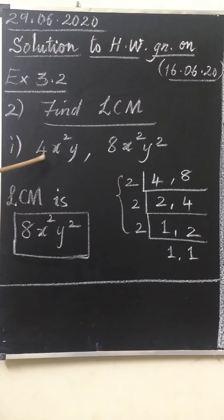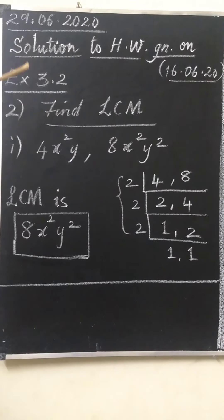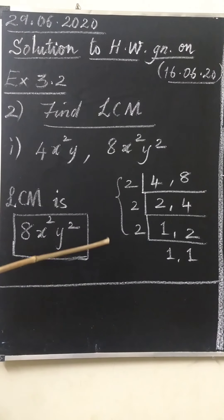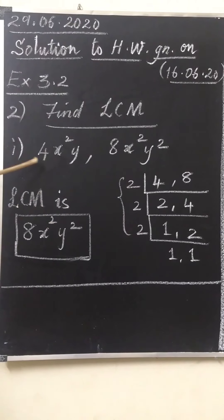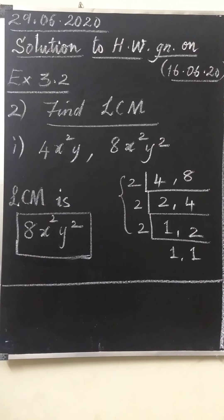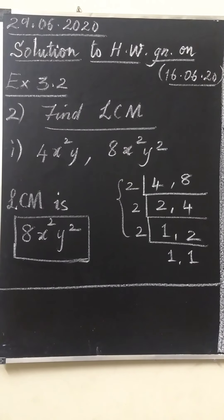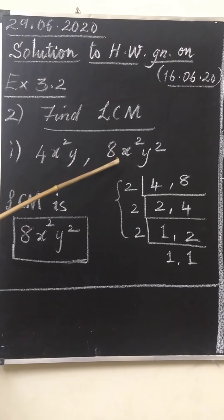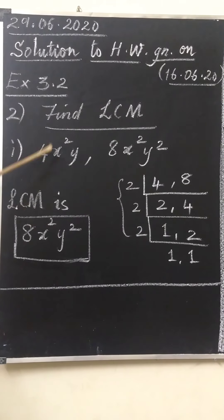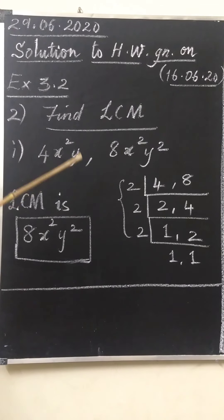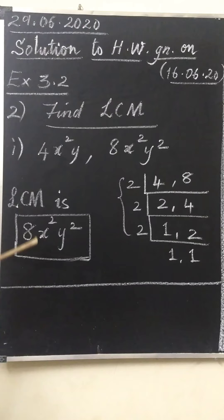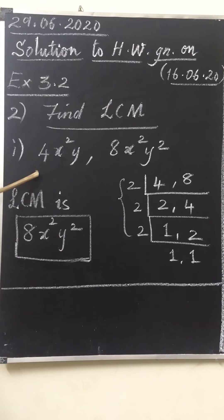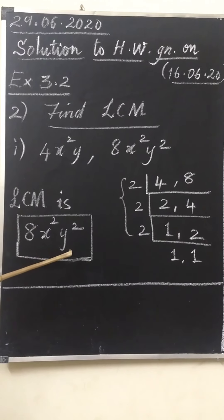The first sum is 4x²y and 8x²y². For 4 and 8 we have to use the prime factorization method to calculate the LCM — the LCM is 8. For the variables x² and x², and y and y²: both x and y are common terms. For x² and x², we select x². For y and y², the highest power should be selected, so y². Therefore the LCM of these two polynomials is 8x²y².